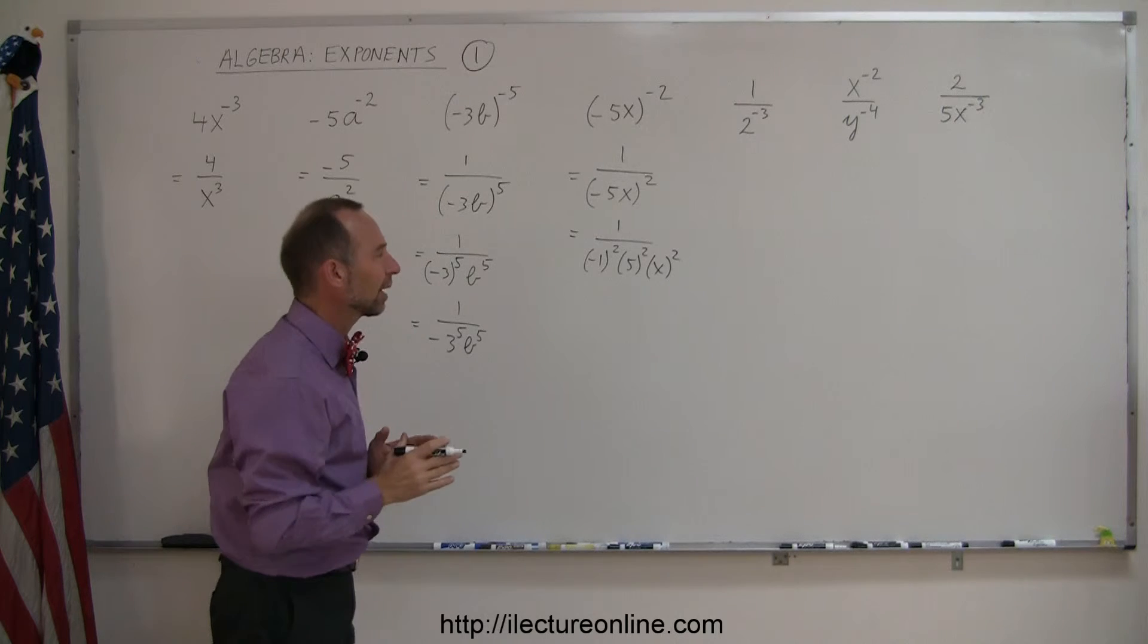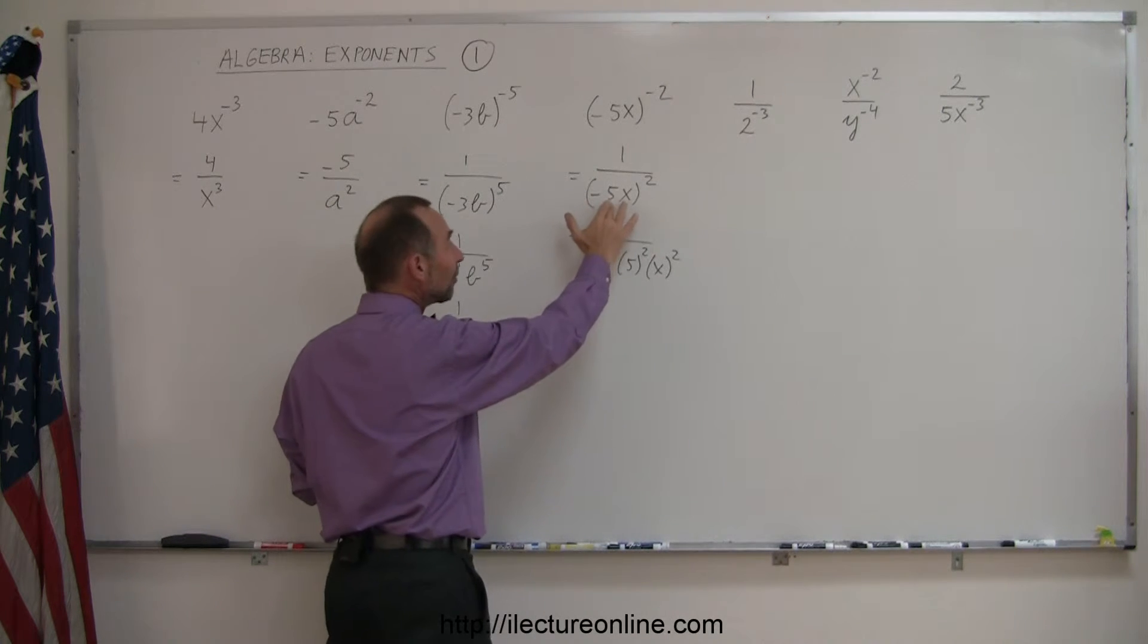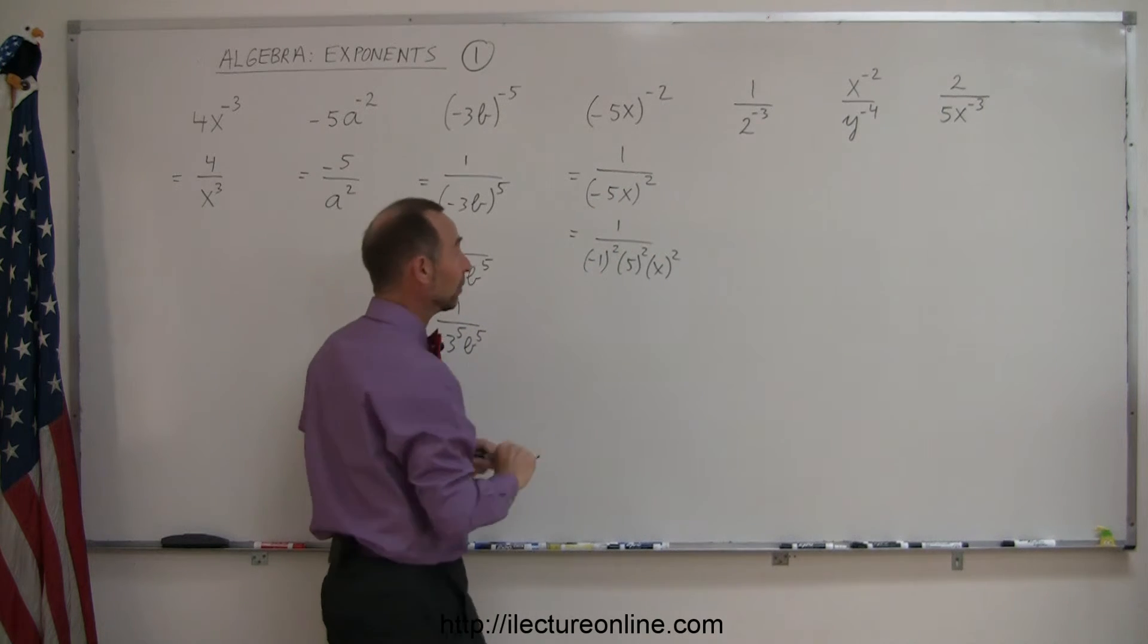Of course, I don't have to write it like that, but just to illustrate that this negative is indeed separate from the 5, and if this is an even exponent, it does apply to the negative, making that a positive number.